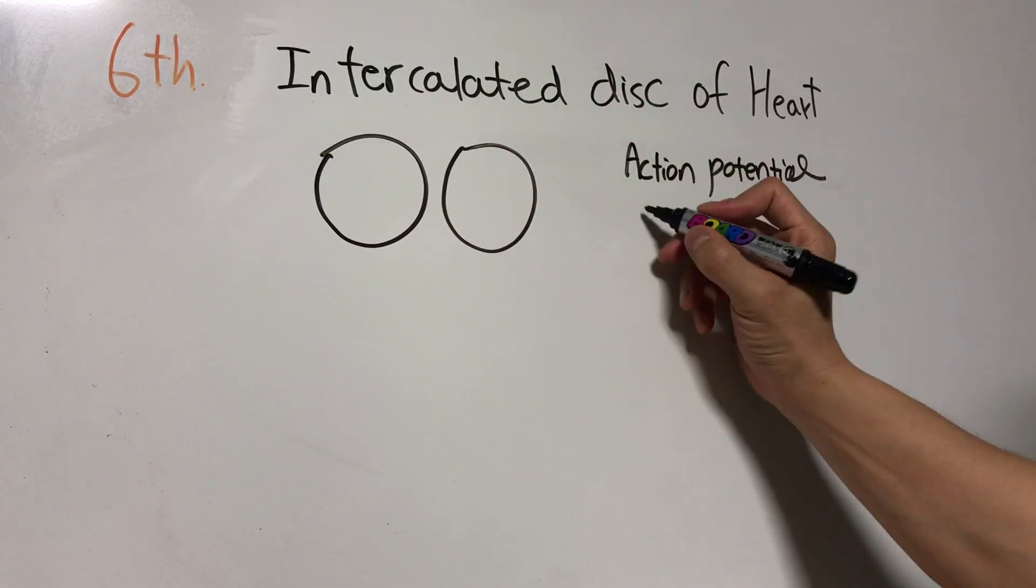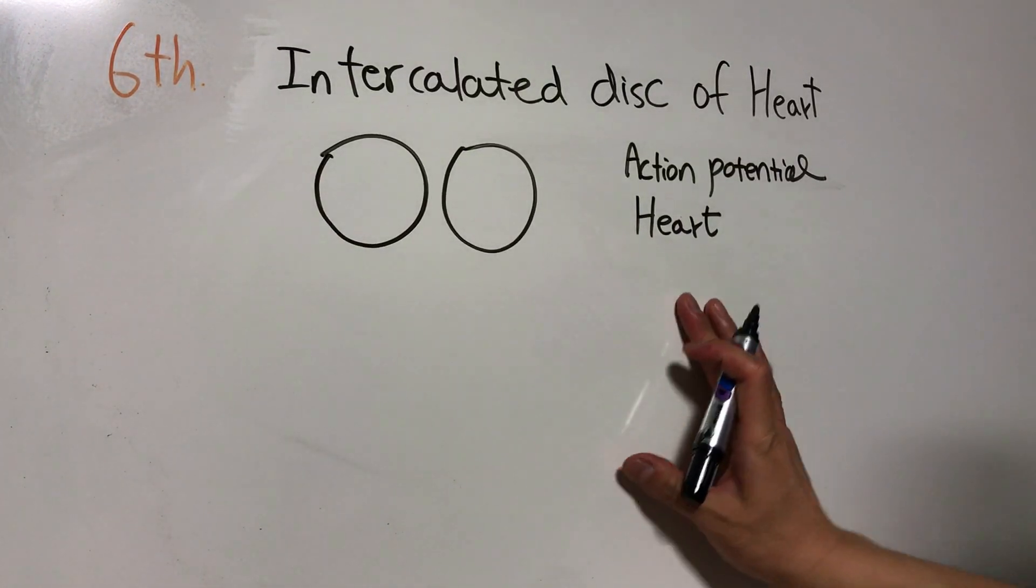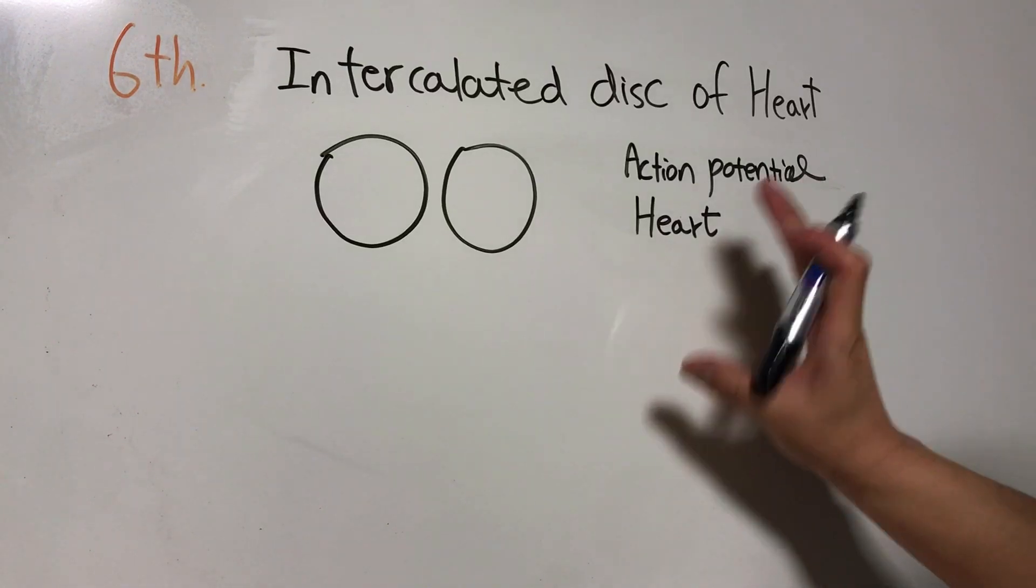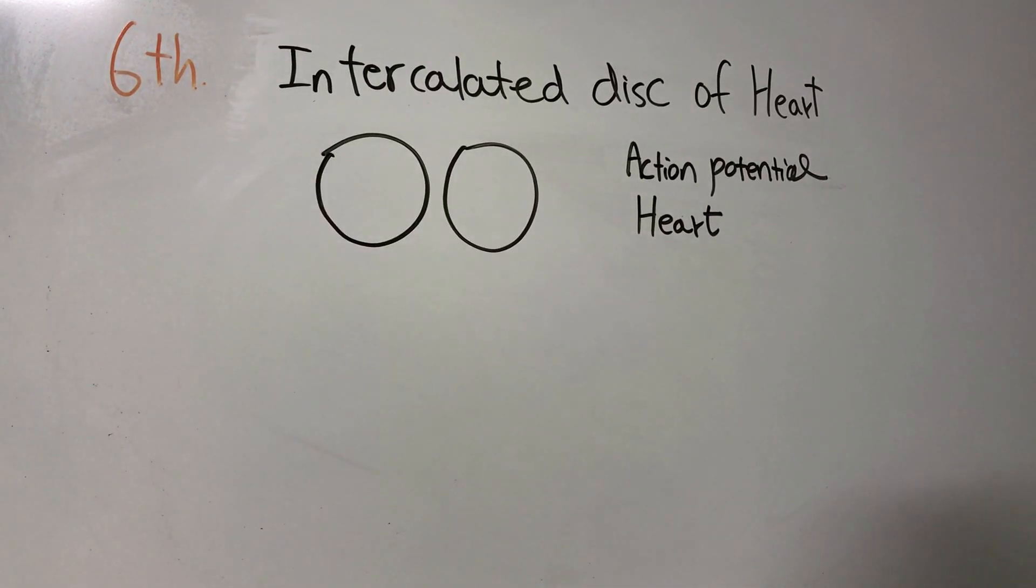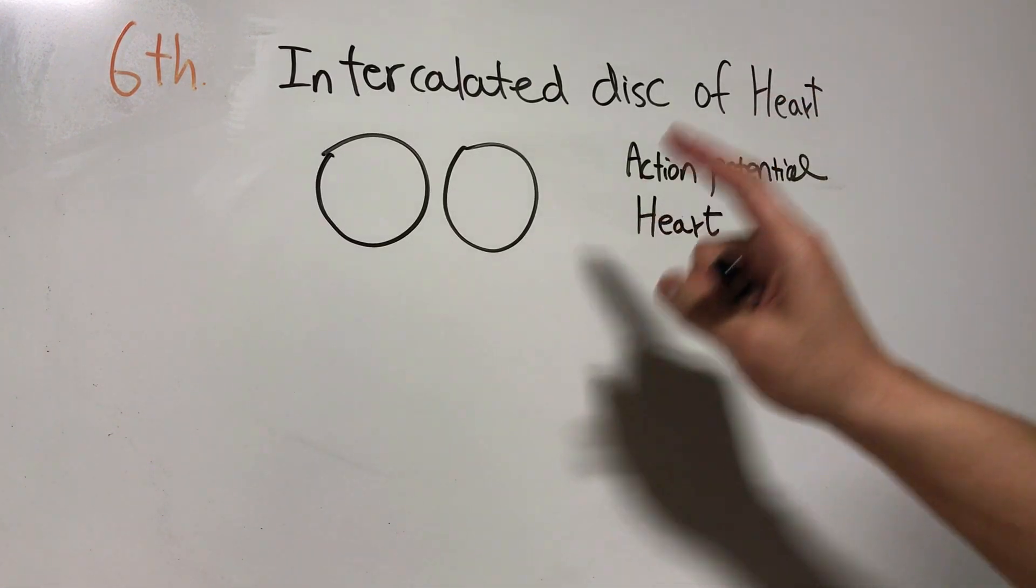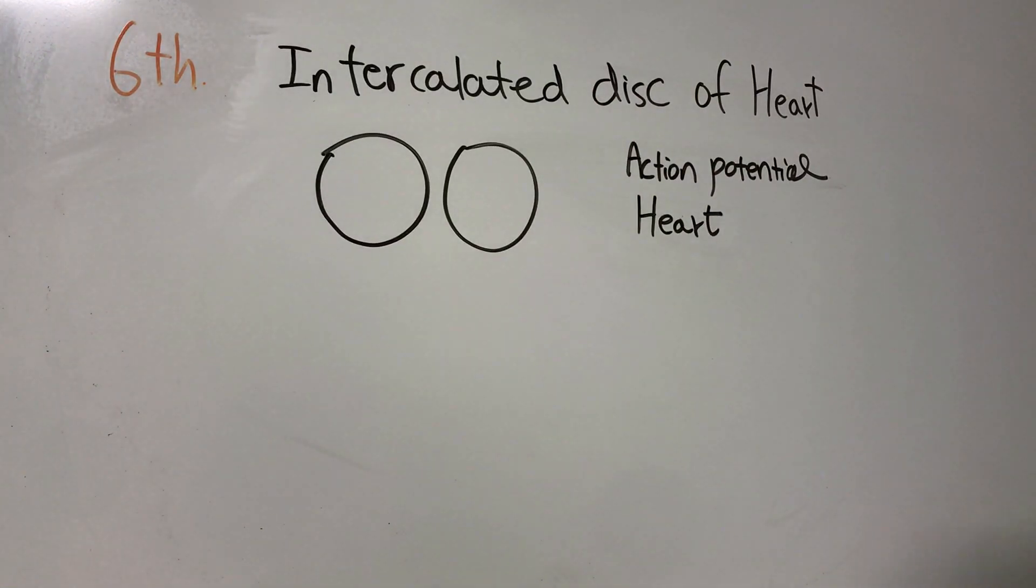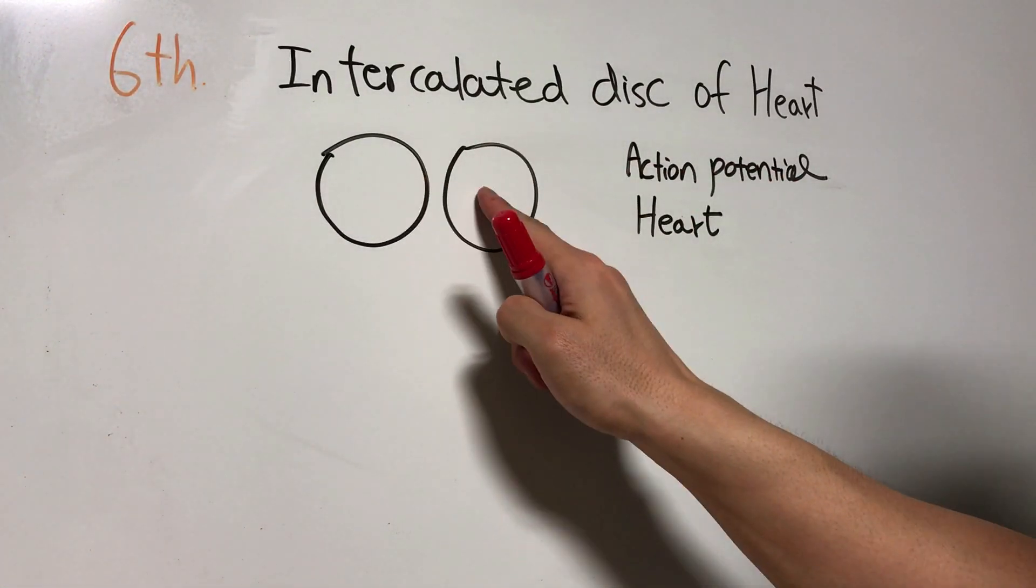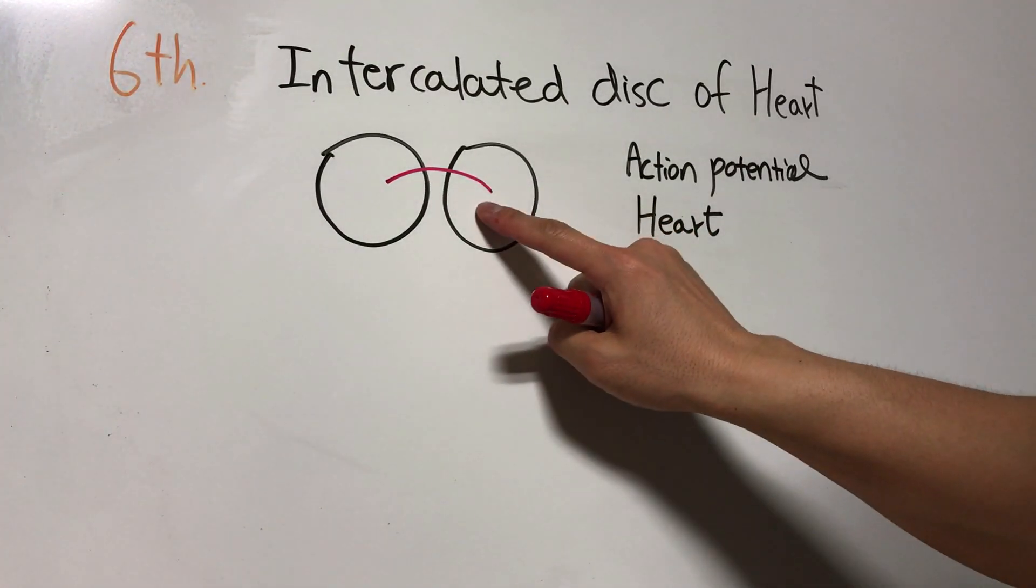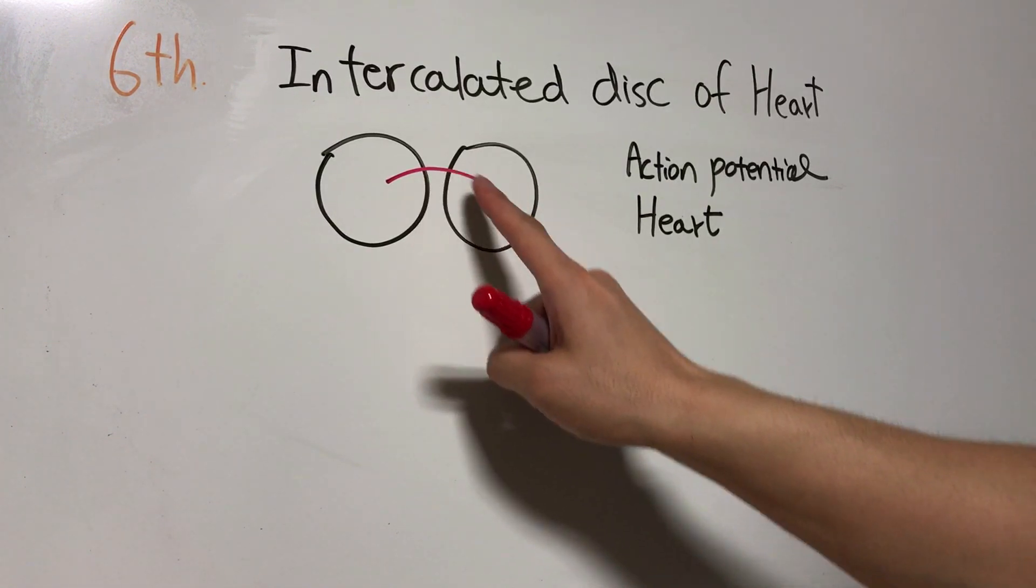Today's topic is how does the heart conduct action potential. To study this, you must first understand the intercalated disc. Myocardial cells are connected—the structure that connects between myocardial cells like this is called an intercalated disc.